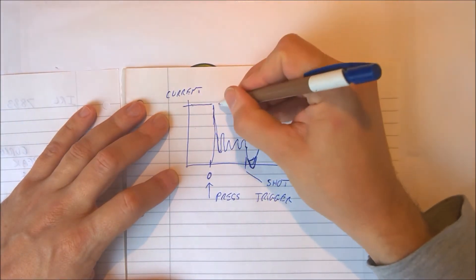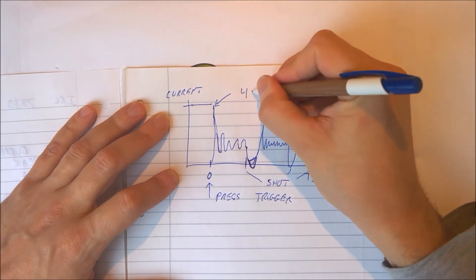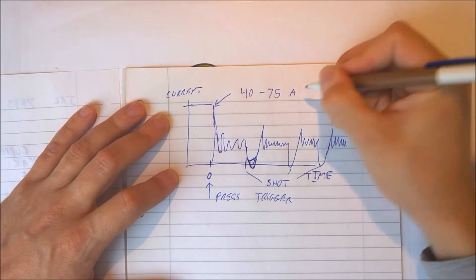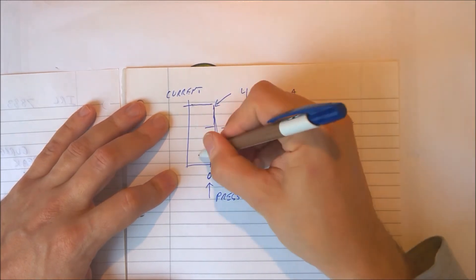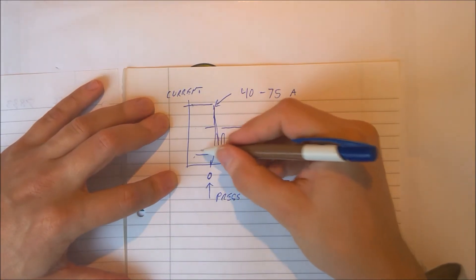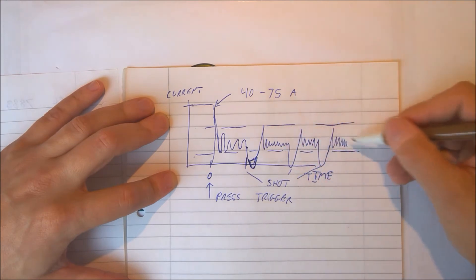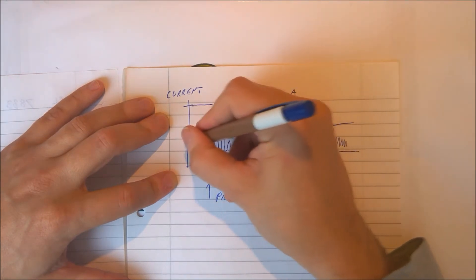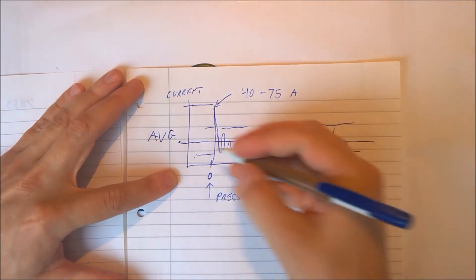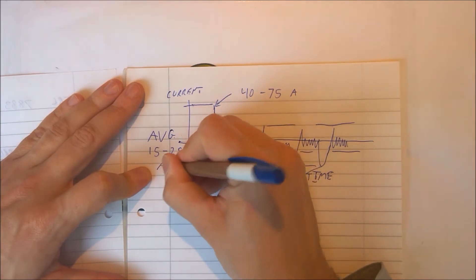The initial peak value will be roughly 40 to 75 amps. If you take the average value of all the values in this area, you will hit an average that will be around 15 to 25 amps.